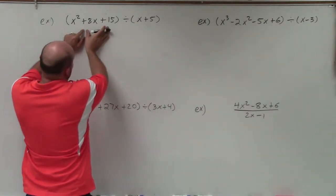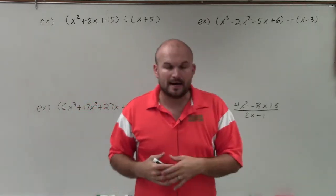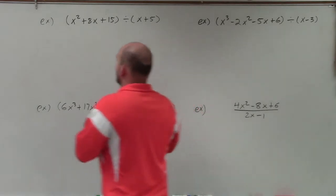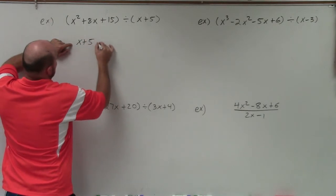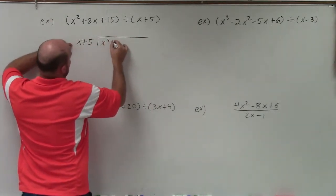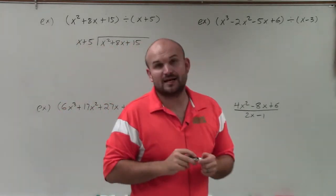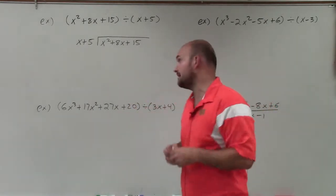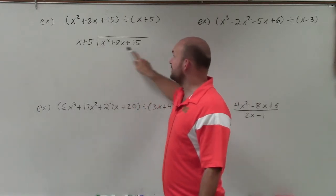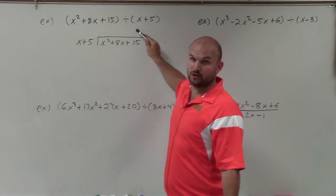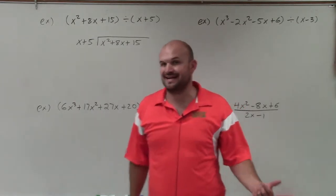Basically, what we have here is a polynomial being divided by another polynomial. When we're using long division, we're going to use the long division algorithm, so we set it up like a long division problem. I'll have x plus 5 divides into x squared plus 8x plus 15. It's important to understand the vocabulary: what you're dividing by is your divisor, what you're dividing into is your dividend, and the answer we write up top is our quotient. We want to determine how many times does x plus 5 divide into x squared plus 8x plus 15.